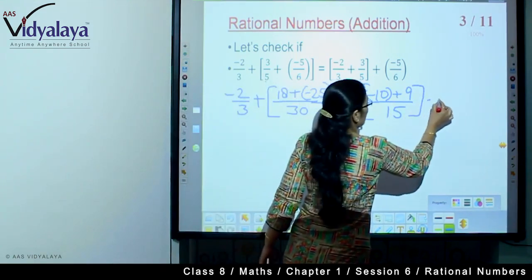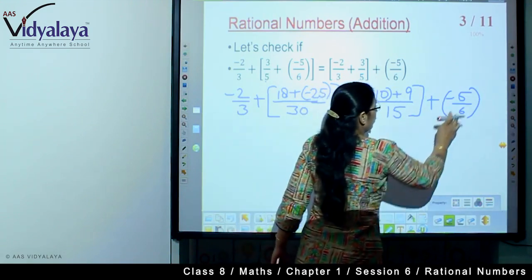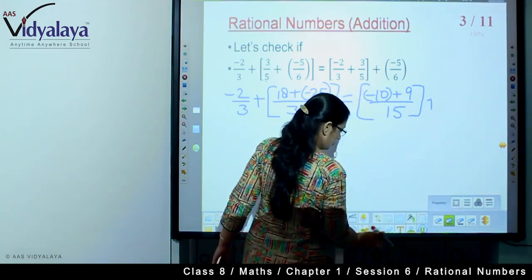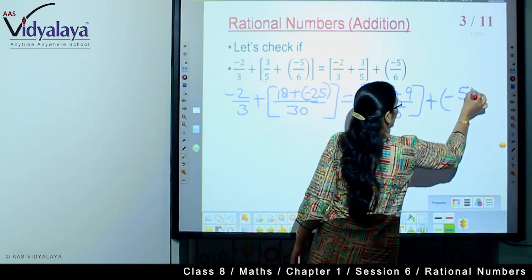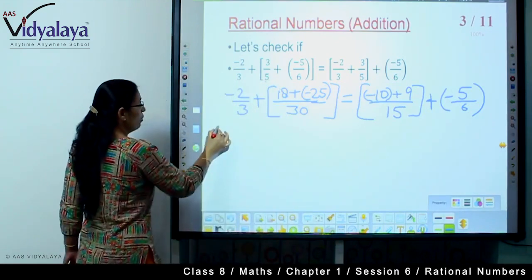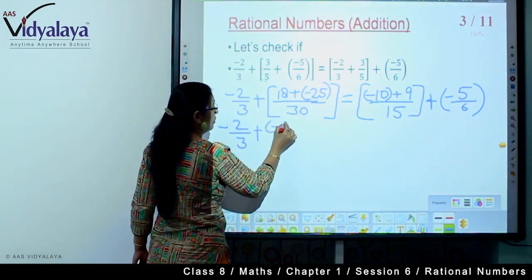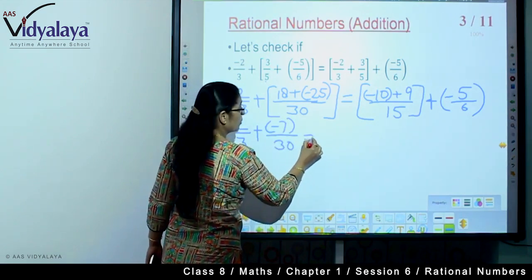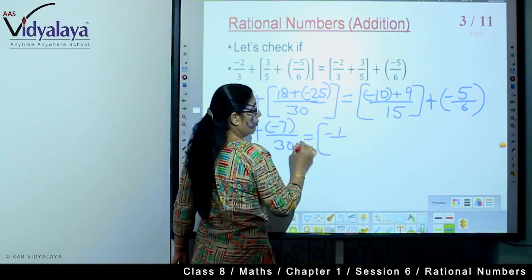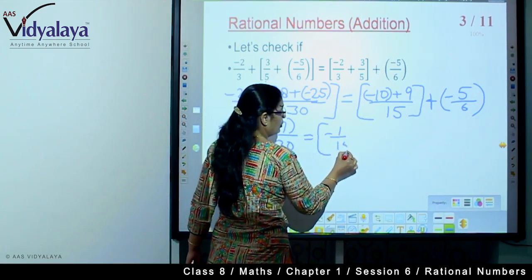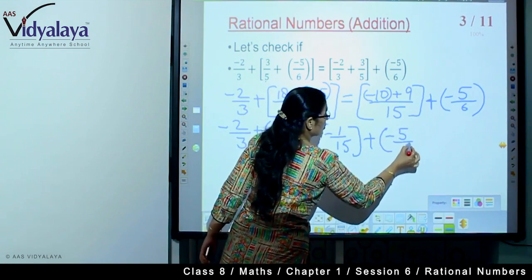This number 5 upon 6 is in separate form. So this is 5. I am writing this again: plus minus 5 upon 6. Now we have values. We are going to solve. Minus 10 plus 9 is minus 1 upon 15, plus minus 5 upon 6.